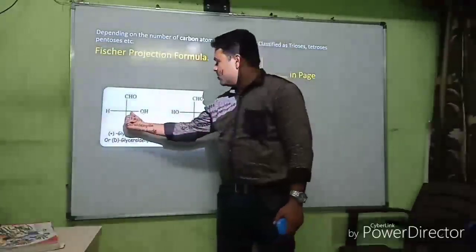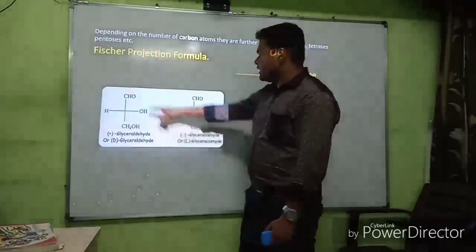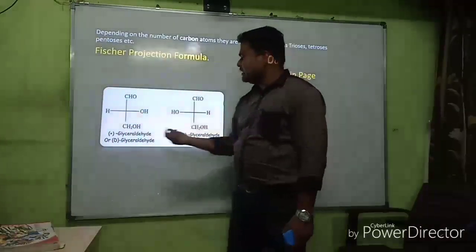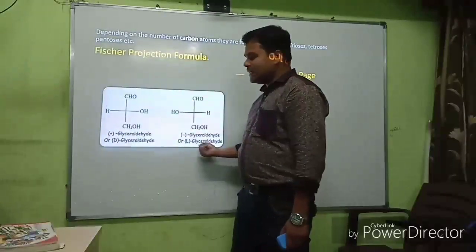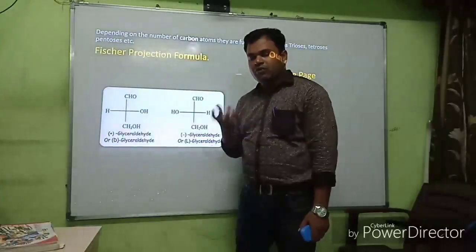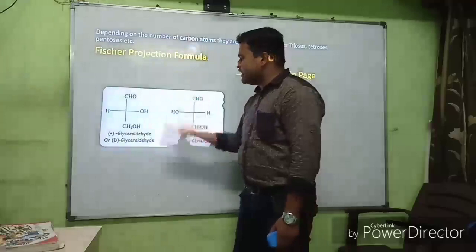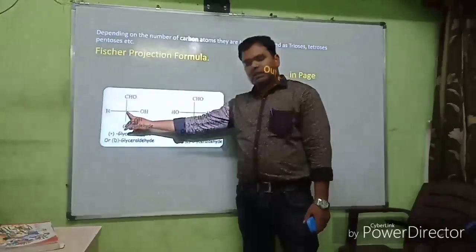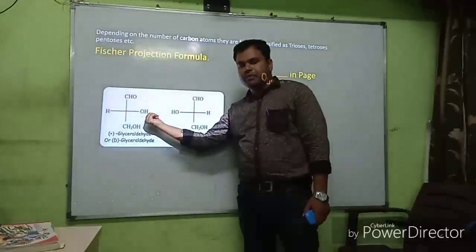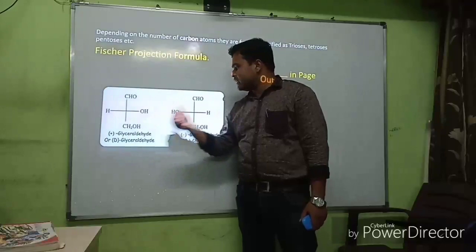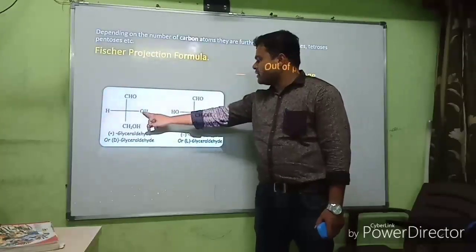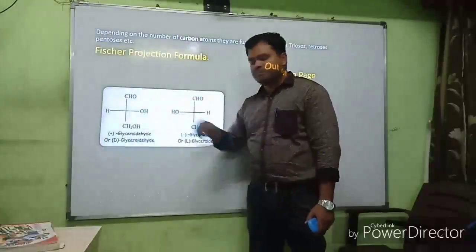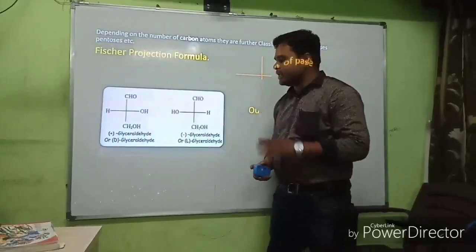In the Fischer projection, the horizontal line is in the page and the vertical line is out of the page — we are representing a three-dimensional structure. Carbohydrates are classified as D and L: D-glyceraldehyde and L-glyceraldehyde. If the hydroxyl group is on the right-hand side of the chiral carbon, it is called D-glyceraldehyde; if on the left-hand side, it is called L-glyceraldehyde. These are mirror images of each other.